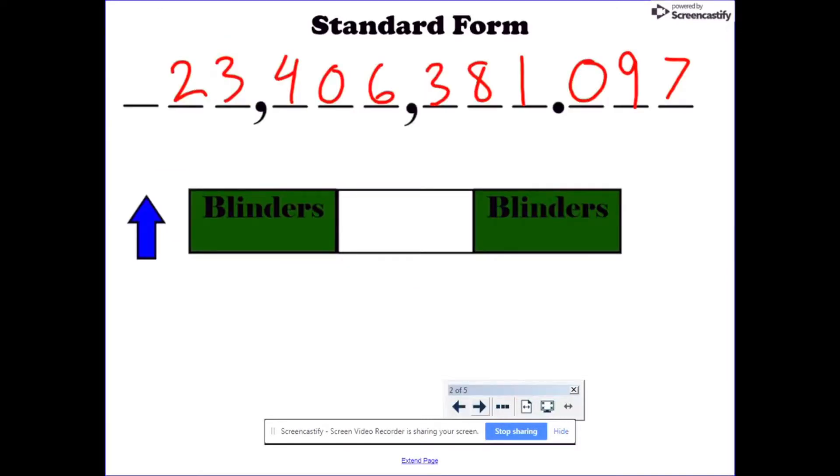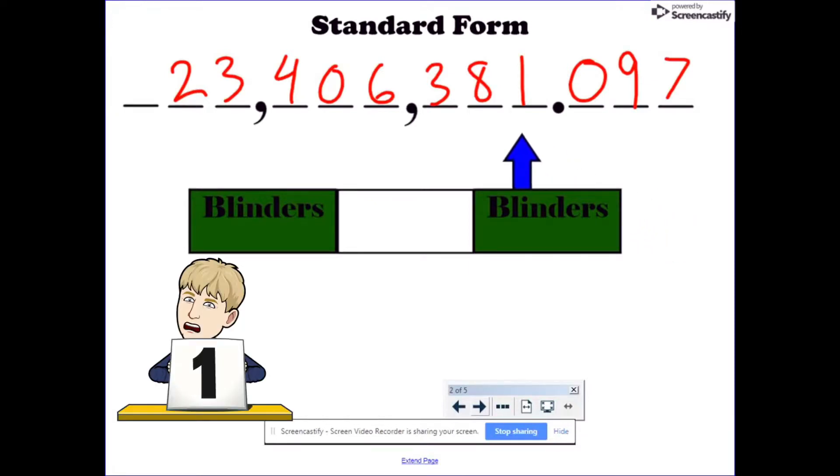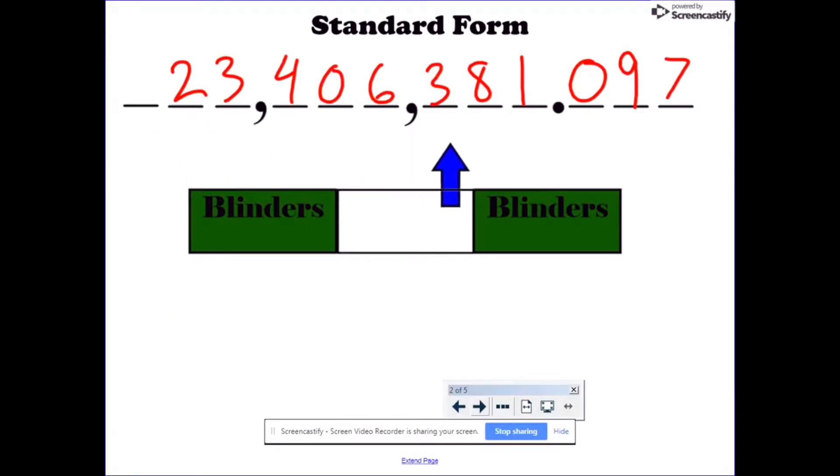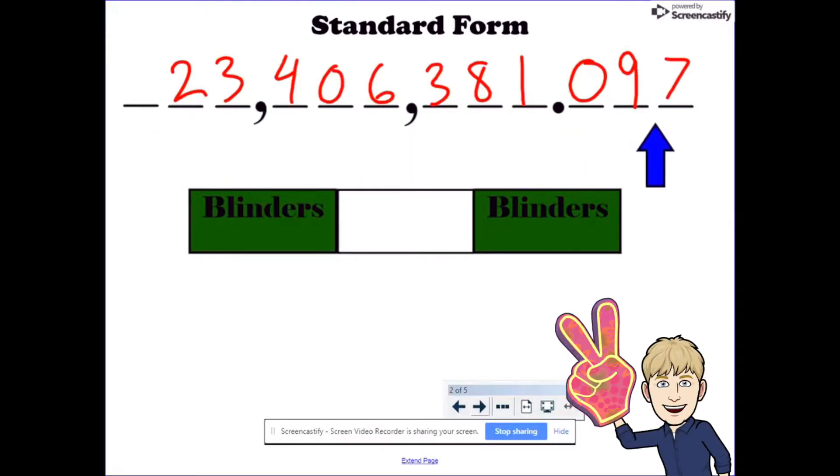Standard form, 23,406,381 and 97 thousandths. Standard form is the form that you most likely think of when you hear numbers. There are two areas I'm going to go over that students sometimes struggle with. First, how do you read very large numbers without getting tripped up? And second, how do you read the decimals?